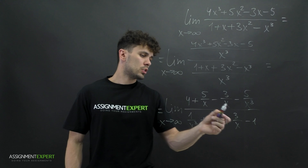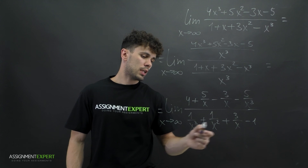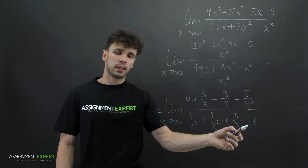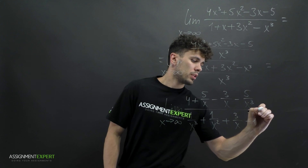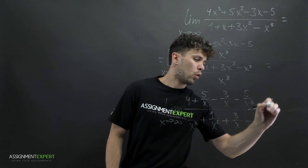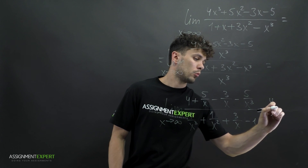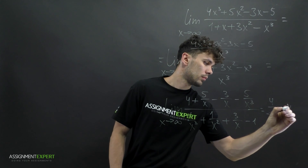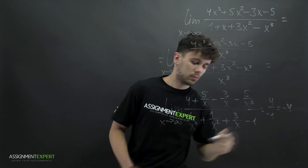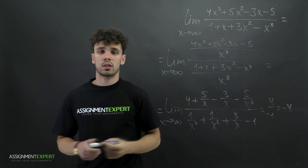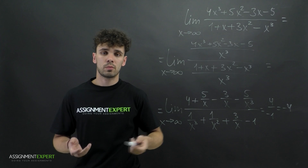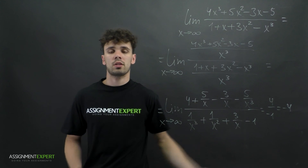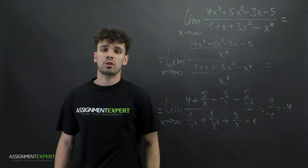Since all terms with x in the denominator tend to 0, we are left with 4 over negative 1, which gives us negative 4. This is the answer — it demonstrates the last example where we get a constant number. Thanks for watching, see you soon!